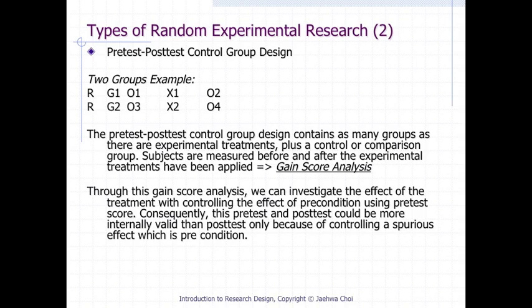Another popular type of random experimental design is the pre-test/post-test control group design. It contains as many groups as there are experimental treatments, plus a control or comparison group. Subjects are measured both before and after the experimental treatments, allowing for gain score analysis. This enables investigation of the treatment effect while controlling for pre-condition using the pre-test score, making it more internally valid than post-test only design.